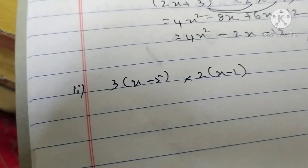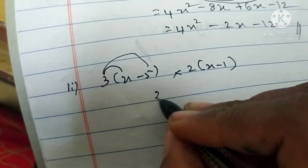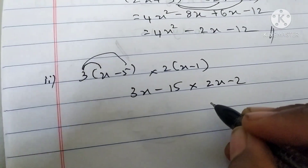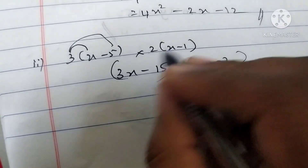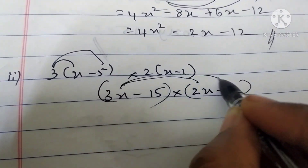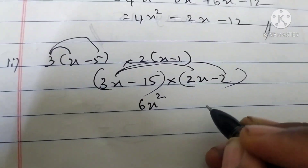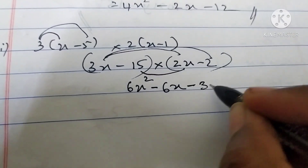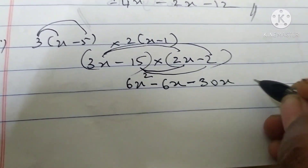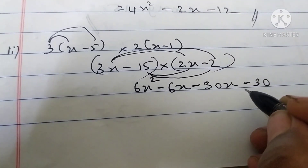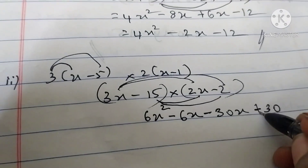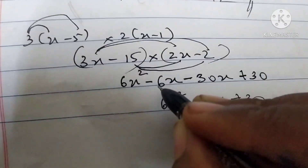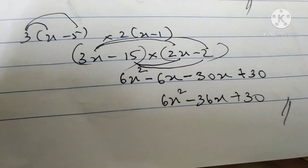Next: 3 into x minus 5 multiplied by 2 into x minus 1. First expand each bracket: 3 into x gives 3x, 3 times 5 is 15. Then 2 into x minus 1 gives 2x minus 2. Now multiply these two results: 3x times 2x is 6x square. 3x times minus 2 gives minus 6x. Then minus 15 times 2x gives minus 30x. Minus 15 times minus 2 gives plus 30. Combining x terms: minus 6x minus 30x gives minus 36x. The answer is 6x square minus 36x plus 30.